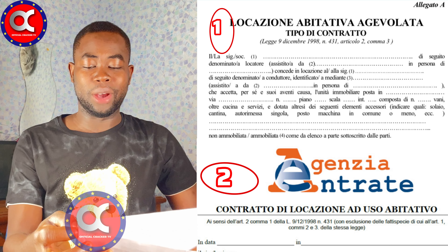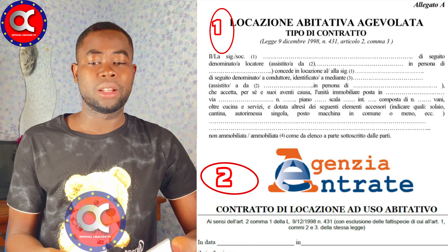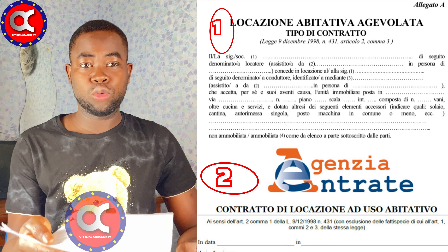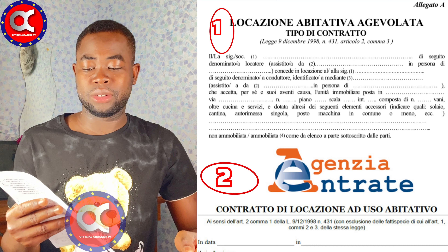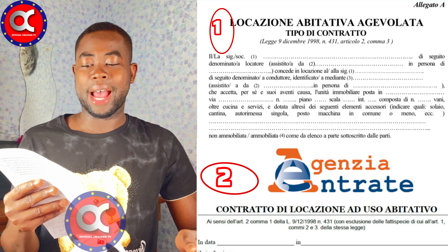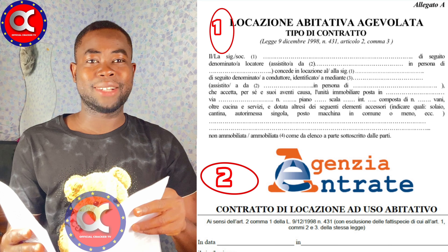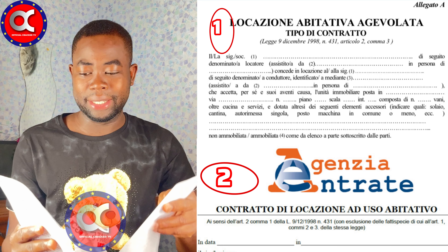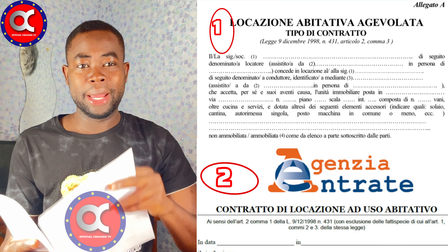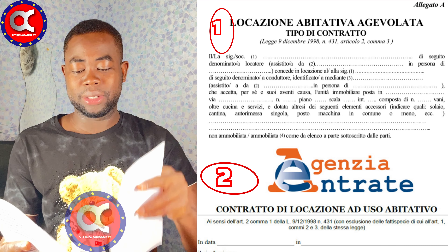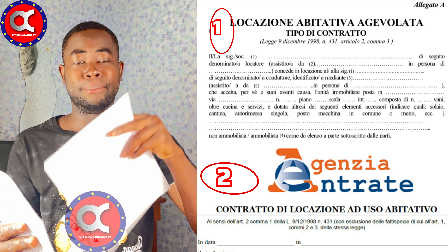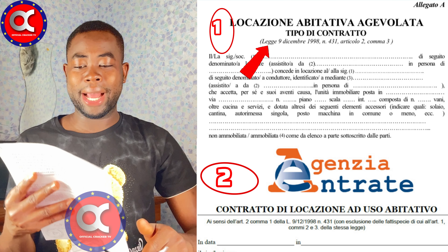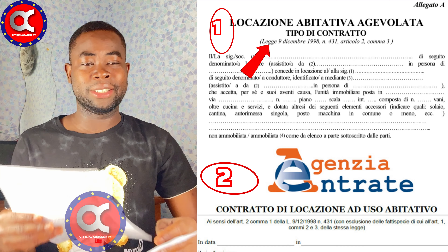Normally, if you are renting a house and you have a house contract, you need to have these two important documents. The first one I am showing you here is Locazione Abitativa Agevolata. This is the document that contains all the details of the house that you are living in, the name of the main owner of the house. Everything is here.